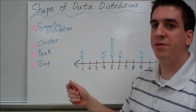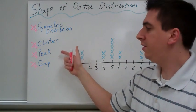First term is symmetric distribution. Then we have cluster, peak, and also gap.